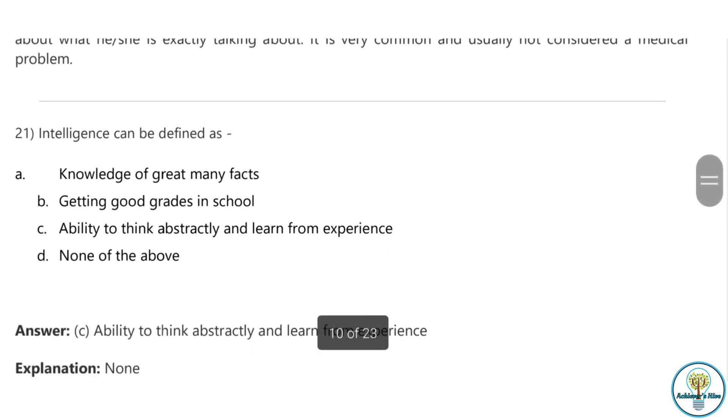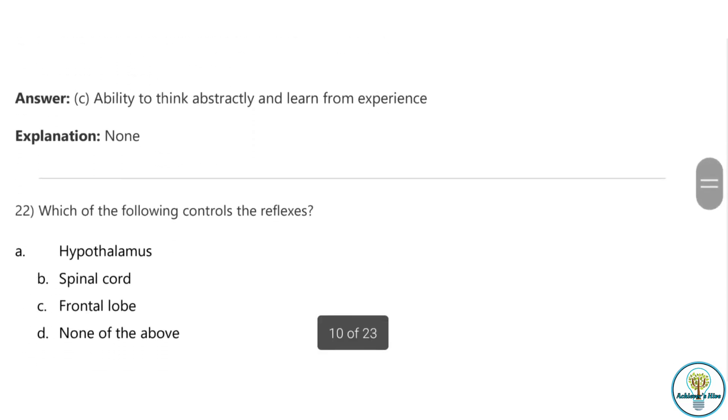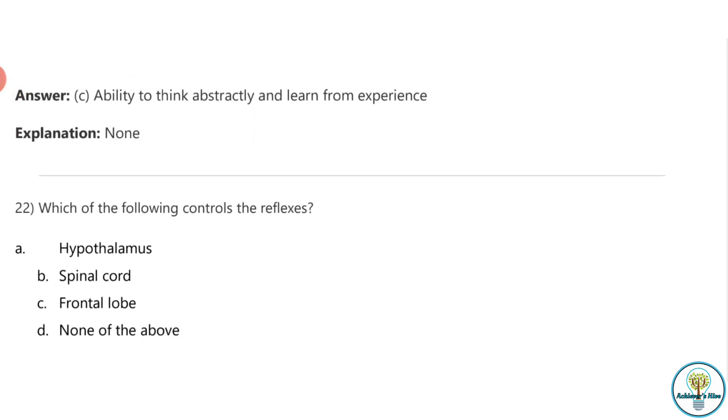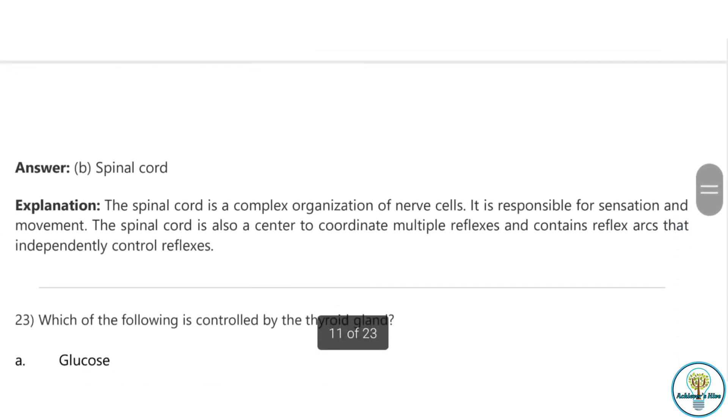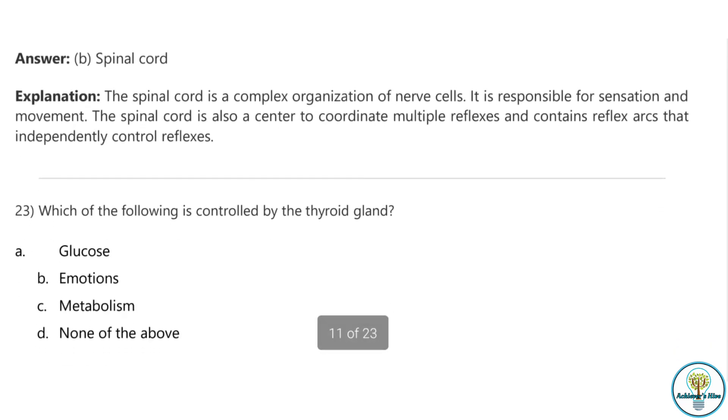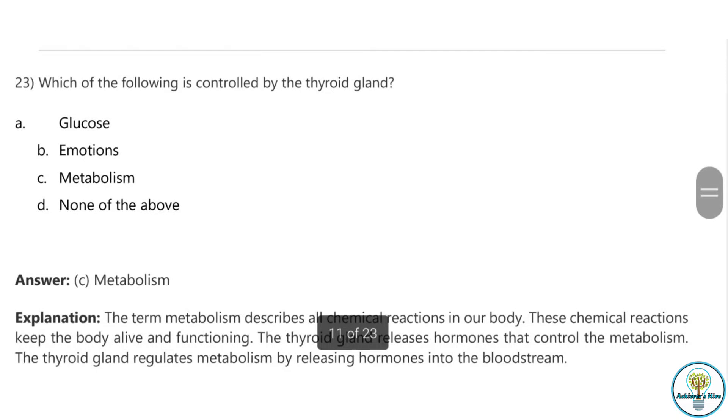Question twenty-one: Intelligence can be defined as the ability to think abstractly and learn from experience. It's not about getting good grades in school or knowledge of many facts. Question twenty-two: Which of the following controls reflexes? The correct answer is the spinal cord. It's a complex organization of nerve cells responsible for sensation and movement. The spinal cord is also the center to coordinate multiple reflexes and contains reflex arcs that independently control reflexes.